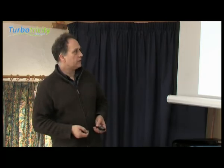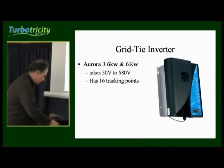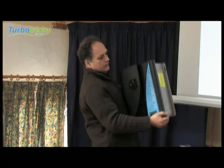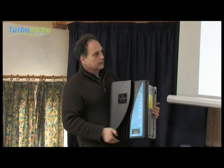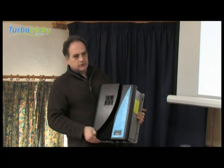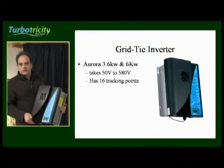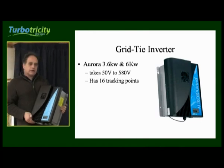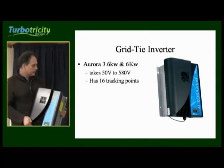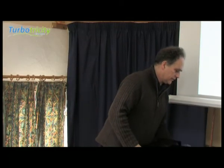Similarly, the Aurora inverter — a quite heavy little box — can take any voltage between 50 volts DC and 580 volts. The beauty of this is that once the turbine starts spinning and gets up to a rate producing more than 50 volts, this inverter is able to come online and start tying into the mains.